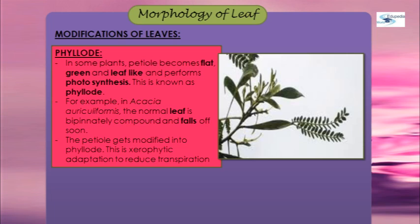Now comes phyllode. Phyllode is the modified petiole or rachis of a leaf, modified into a green, flat structure for the purpose of photosynthesis. The lamina of such leaves is poorly developed. In Acacia auriculiformis, the normal leaf is bipinnately compound and falls off soon, and the petiole gets modified into a flattened, green, leaf-like phyllode that performs photosynthesis. This is a xerophytic adaptation to reduce transpiration. It is seen in Acacia and rhubarb.